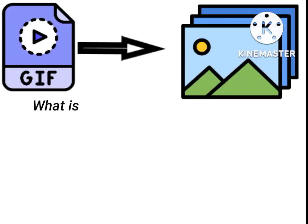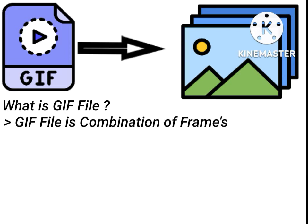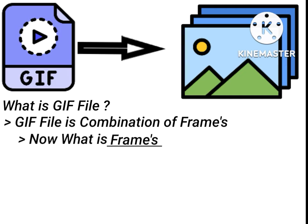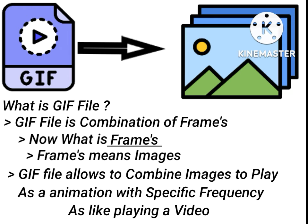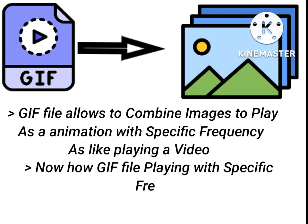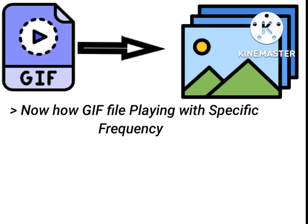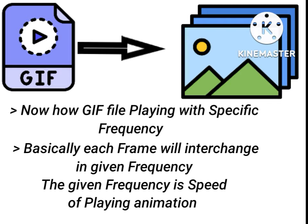So the question is: what is a GIF file? The answer is a GIF file is a combination of frames. Frames means images. A GIF file allows combining images to play as an animation with a specific frequency, similar to playing a video. Now, how does a GIF file play with a specific frequency? Basically, each frame will interchange at a given frequency — that given frequency is the speed of playing the animation.